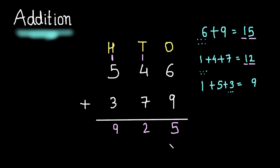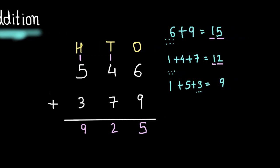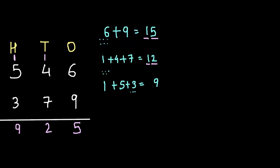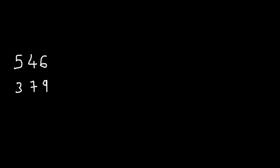So, friends, this is the sum of addition with carry over. And we have used here 2 three-digit numbers. Now, let us understand what is going on here. We have numbers 546 and 379. Now, let us expand these 2 numbers.